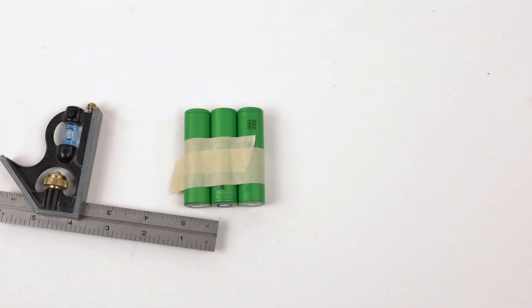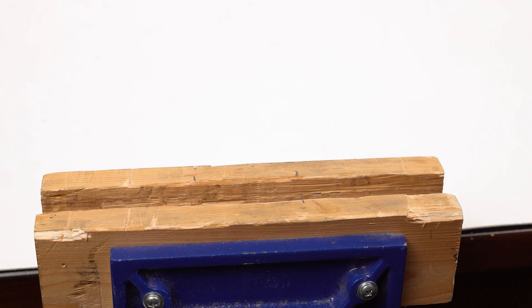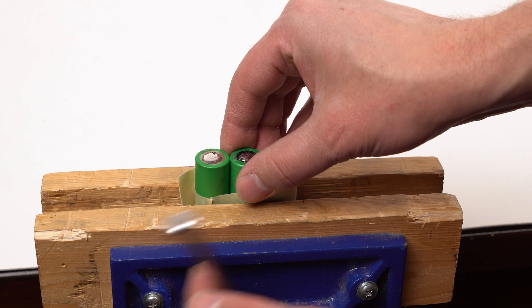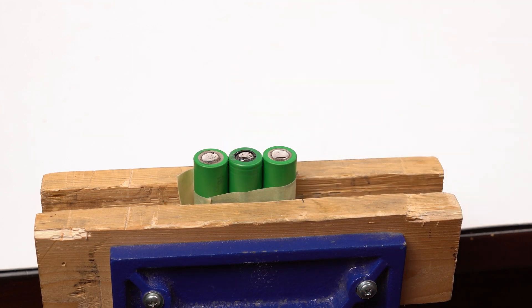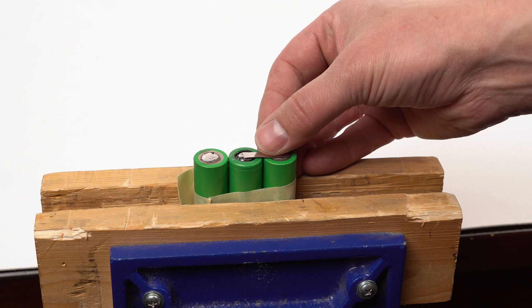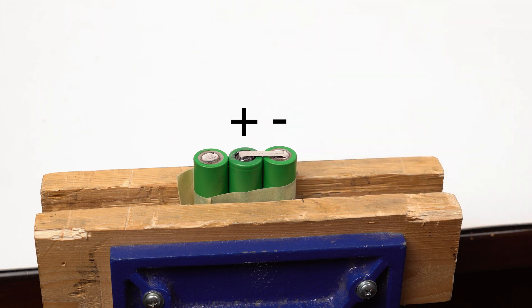Make sure you align your cells positive to negative. Secure the cells. I use a small vise. Place the tabbing on top of the first two cells. Make sure it's going positive to negative.